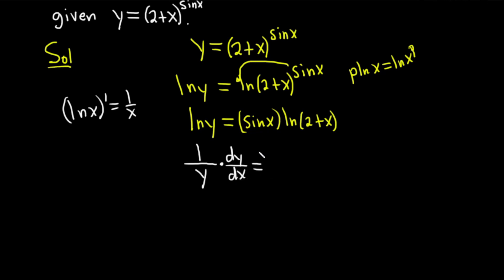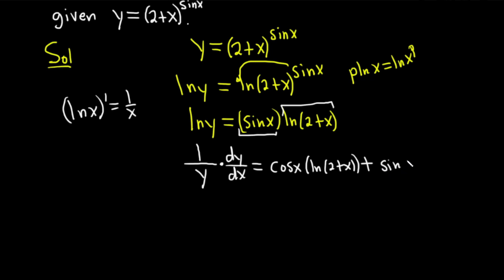So the right-hand side is: derivative of the first (cosine x) times the second (natural log of 2 plus x), plus the first (sine x) times the derivative of the natural log of 2 plus x, which is 1 over 2 plus x, times the derivative of the inside, which is 1 — since the derivative of 2 is 0 and the derivative of x is 1.